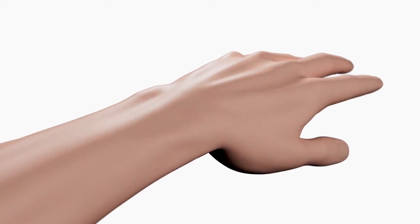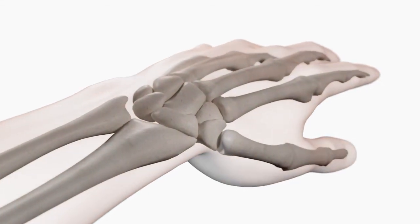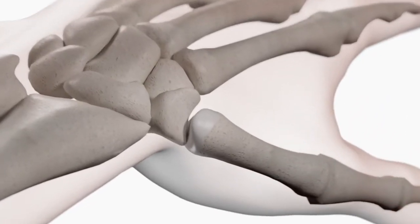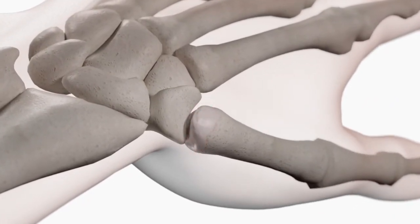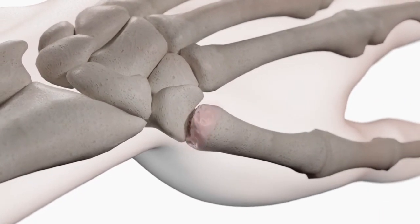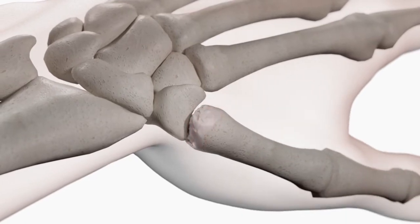Thumb arthritis is one of the most common sites of arthritis in the body. Due to constant use, over time, the cartilage can wear away and osteophytes may form causing pain and sometimes even dislocation.